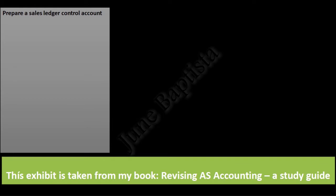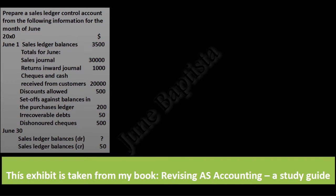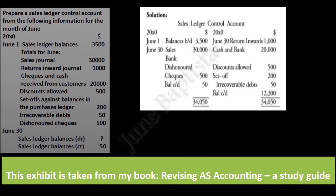This is an exhibit taken from the book Revising AS Accounting: A Study Guide. You are to prepare a sales ledger control account from the information given for the month of June. Looking at the debit side of the sales ledger control account: on the 1st of June, the balances brought down are $3,500. Closing balances on the 30th of June are sales $30,000. Dishonored check represented by bank $500.